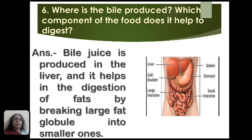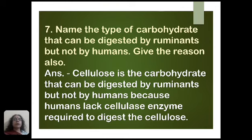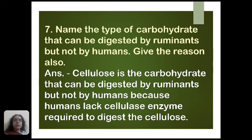The next question is: name the type of carbohydrate that can be digested by ruminants but not by humans, and give the reason also. Cellulose is the type of carbohydrate that can be digested by ruminants but not by humans. Ruminants are grass-eating animals that eat leaves, grass, etc., which contain a large amount of cellulose.